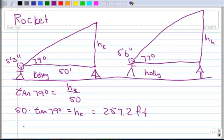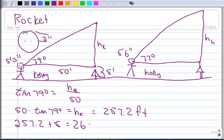But we want to know how tall it went. We need this distance right here. This is the distance from the ground to her eyes. We're going to assume that from the top of her head to her eyes, we'll assume that's about 3 inches. So that makes this distance 5 feet. We're going to take that 257.2, we're going to add 5 feet to it, to give us a grand total of 262.2 feet. So that's how tall Kelsey's rocket went.